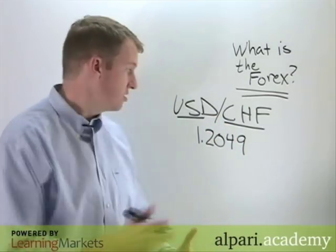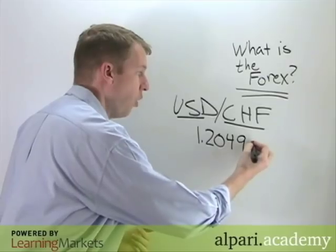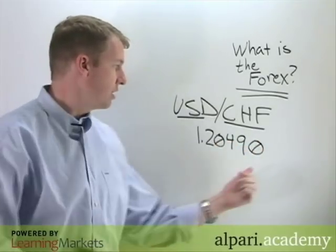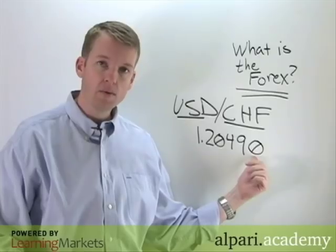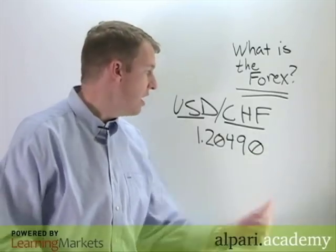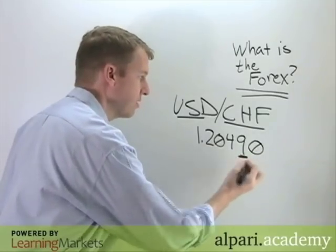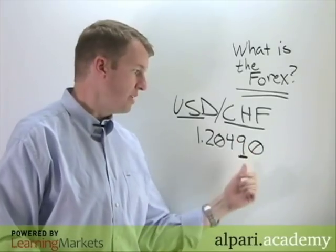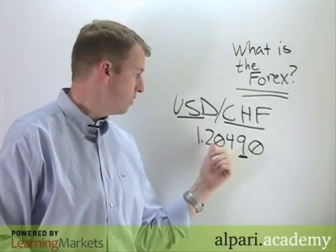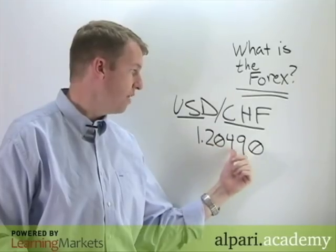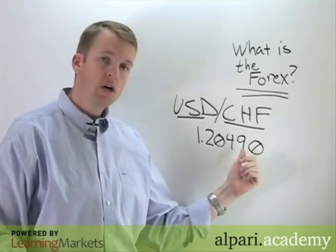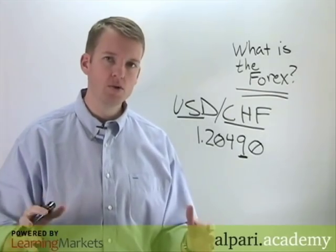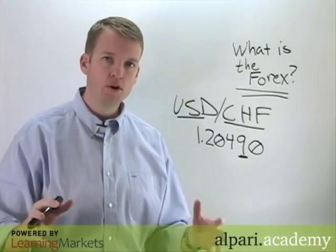Exchange rates are typically carried out to the fourth or fifth decimal place when you're getting really good pricing, all the way out to the fifth decimal place. This decimal place is called a pip. So one move up or down in that number — if we go from 2.049 to 2.050, we've moved up one pip. You'll hear forex traders use that verbiage all the time.